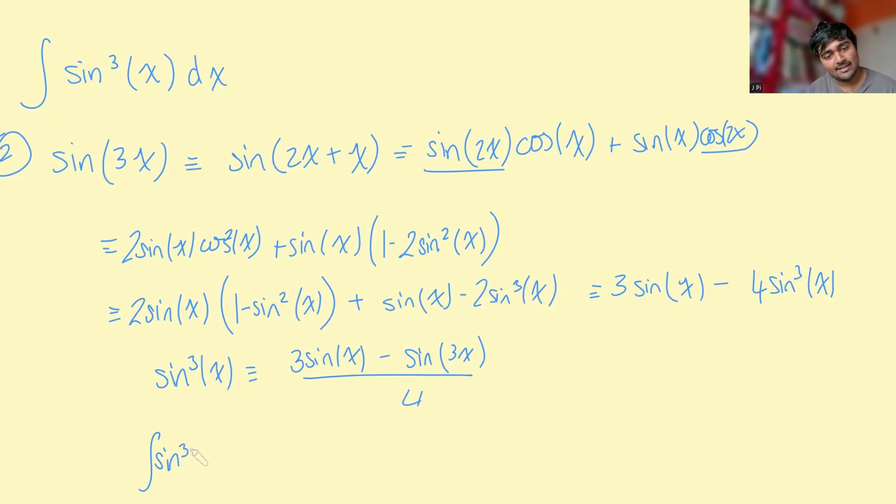Now, if I integrate both sides then, the integral of sine cubed x dx is equal to the integral of this. So if I take out the quarter, it's the integral of 3 sine x minus sine 3x dx.